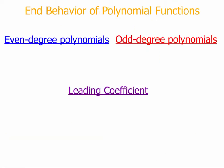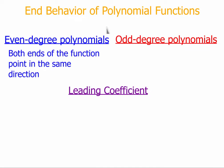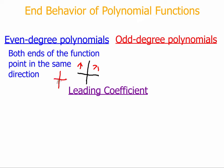One thing we want to talk about is the end behavior of polynomial functions. The end behavior is going to be different depending on whether a function has an even degree or an odd degree. If the degree is even, then both ends of the function are going to point the same way — they're either both going to be pointing up, or both pointing down. On the left and right side, they're going to be pointing in the same direction.